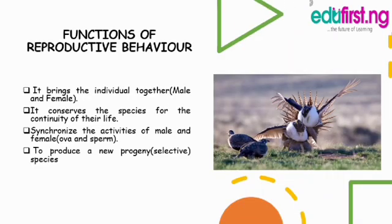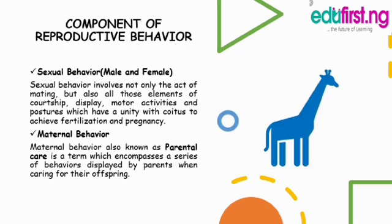Functions of reproductive behavior: Number one, it brings individuals together — that is to say, the male and the female. Number two, it conserves the species for the continuity of their life. Number three, it synchronizes the activities of the male and female — that is, the ovum and the sperm — to produce progeny. It is a species-selective component.